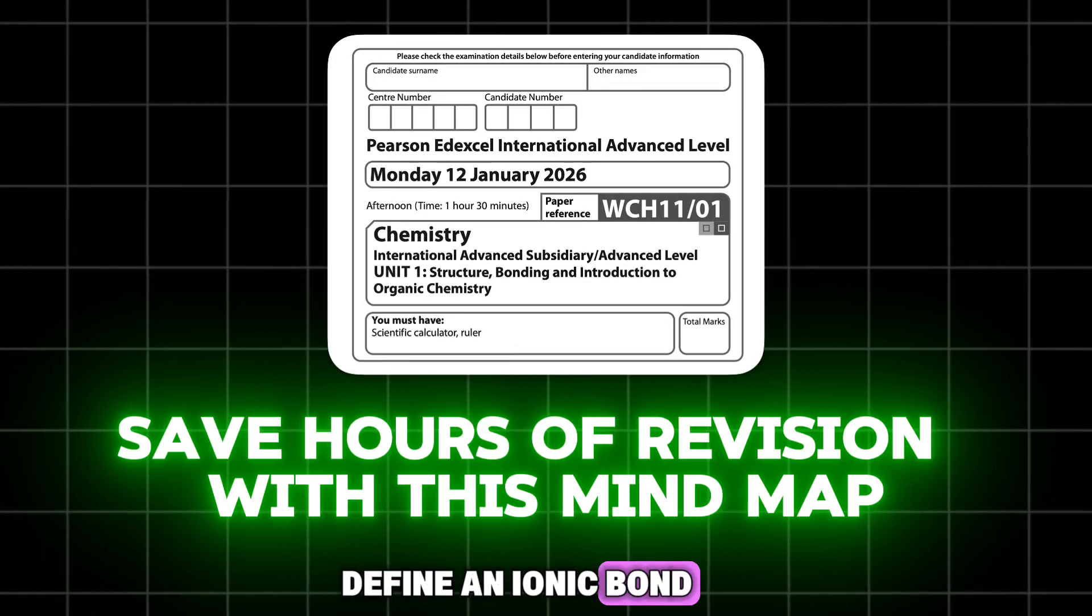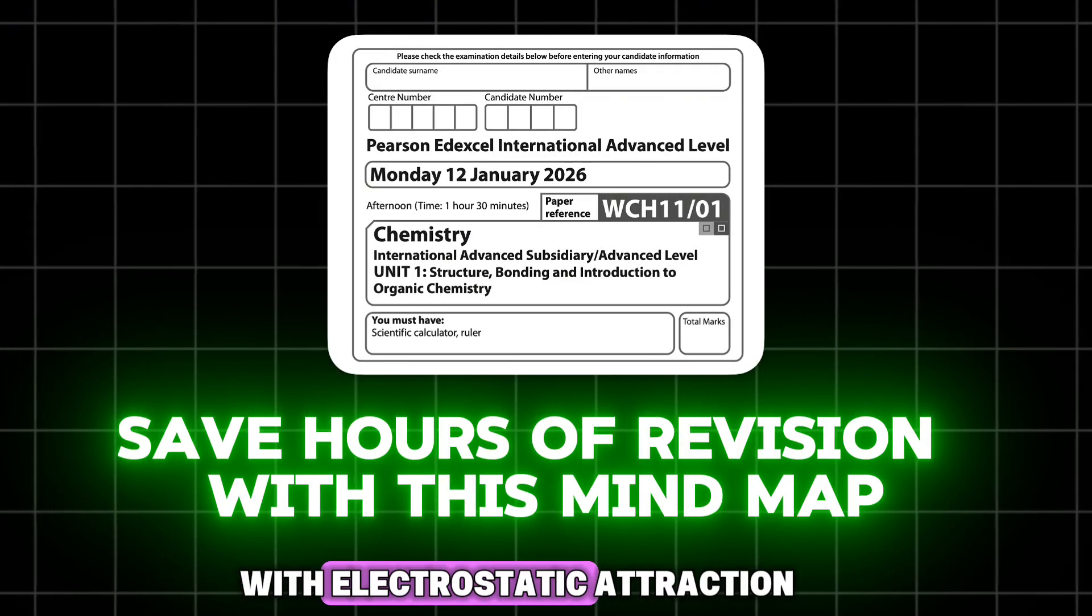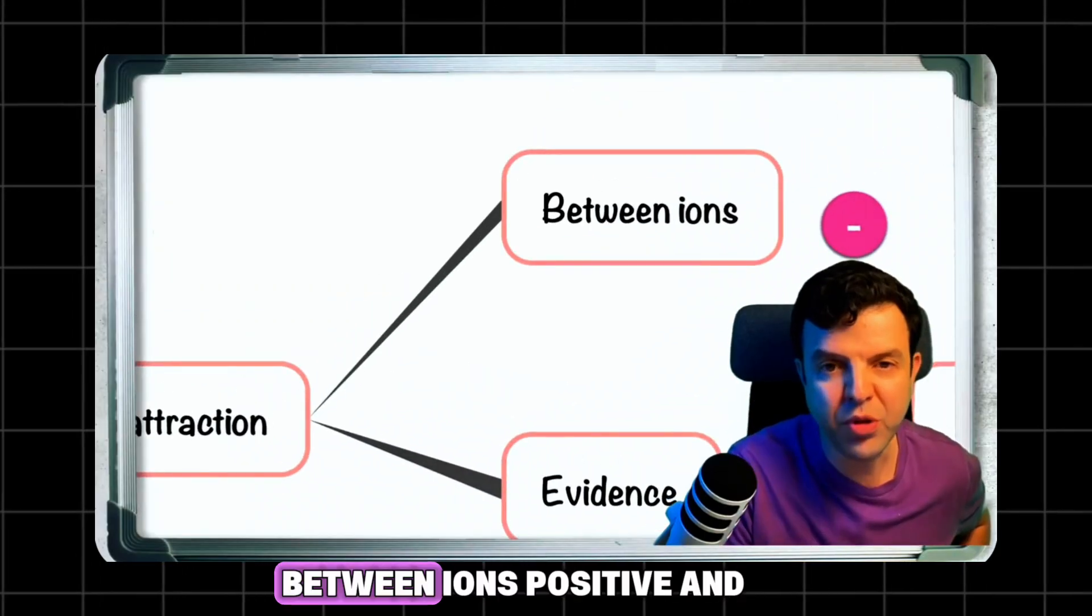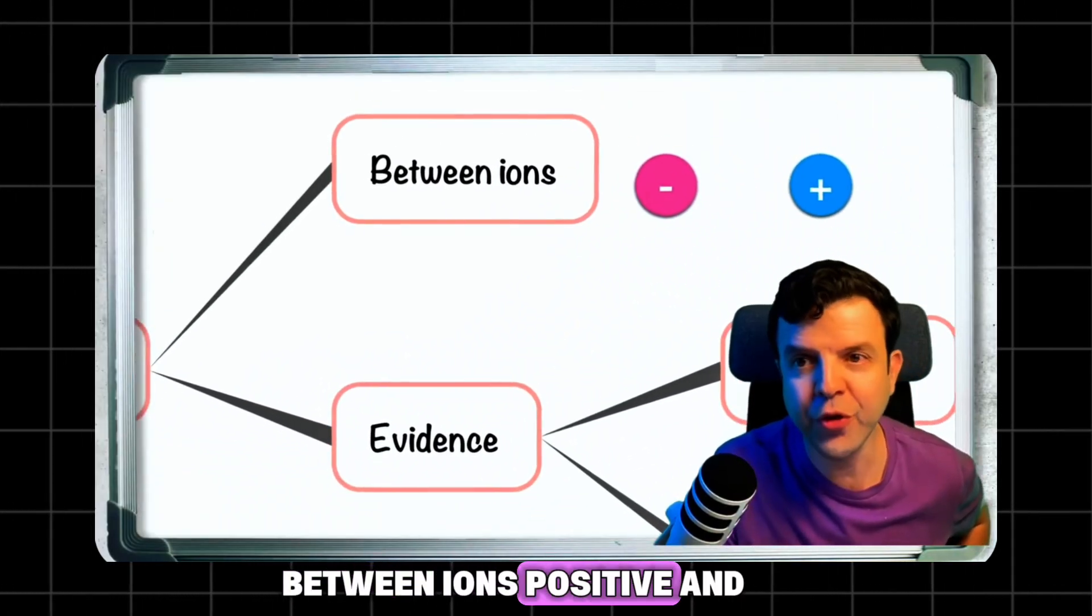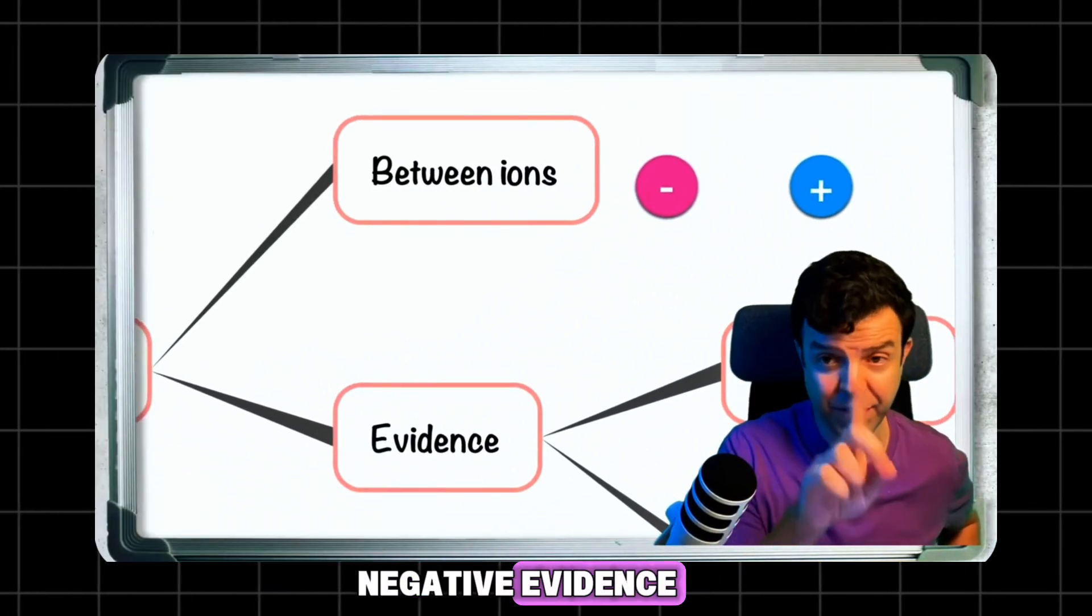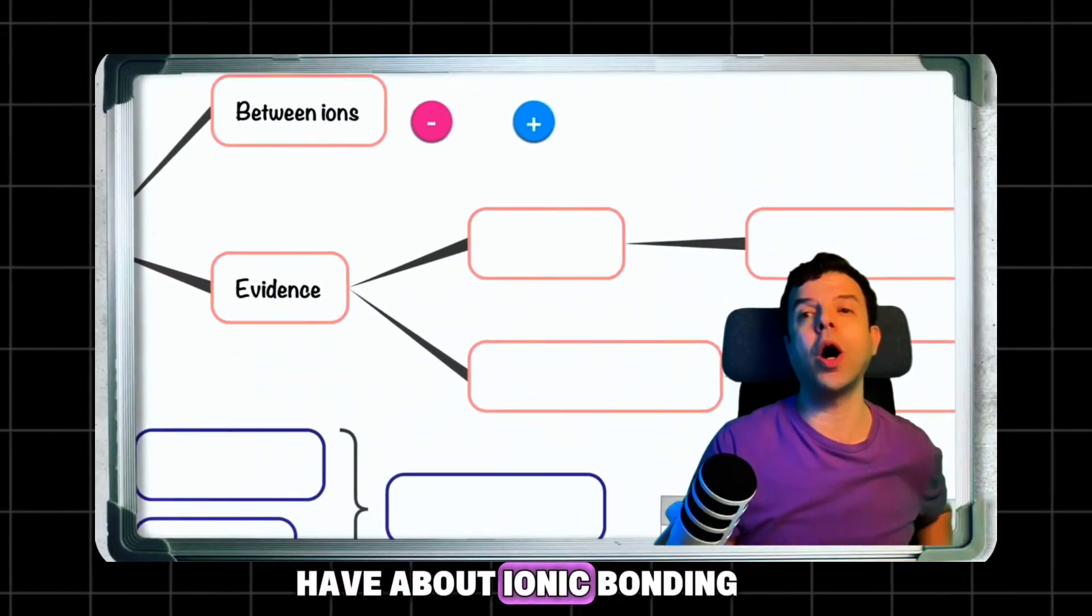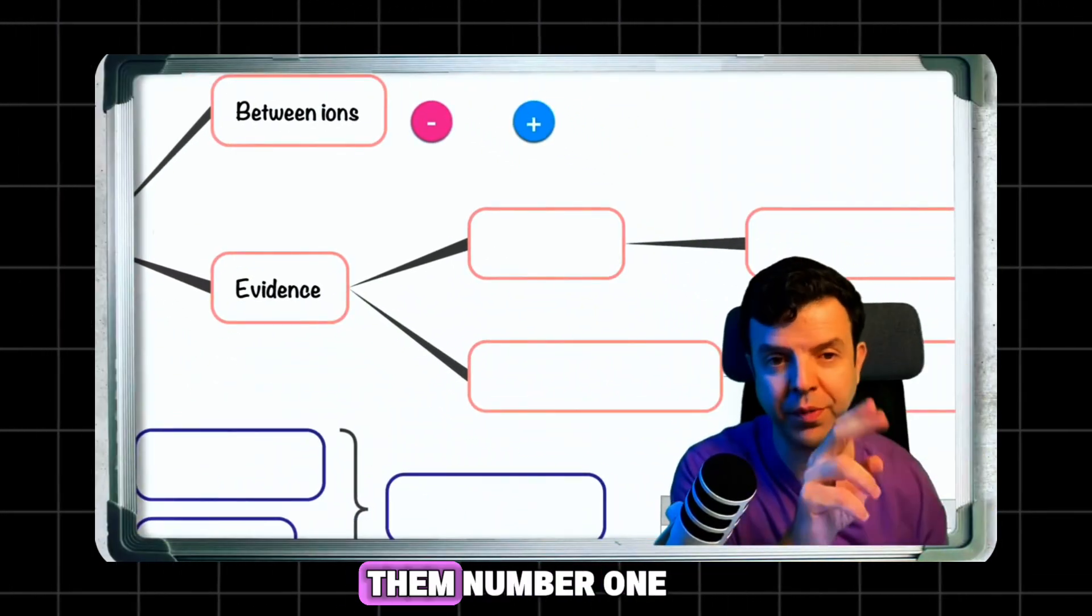When defining an ionic bond, you would always tie it with electrostatic attraction between positive and negative ions. What evidence do we have about ionic bonding? There are two types of evidence.